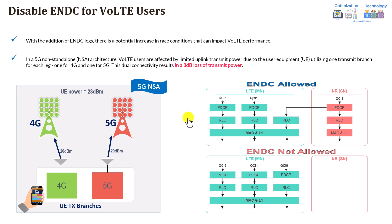The next feature uses exactly the same concept as carrier aggregation, but for NSA 5G users. If you have 5G NSA or ENDC, it is also recommended to disable that for VoLTE users. The reason is the same — the power will be split between one leg transmitted for 4G and one leg for 5G NSA, so you will lose around 3 dB, limiting your uplink coverage. Therefore, it is not recommended to enable ENDC for VoLTE users.